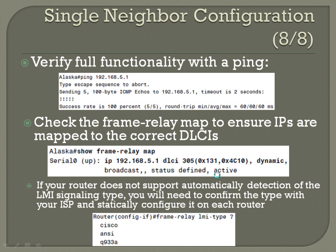If your router does not support automatically detecting the LMI signaling type, you may need to confirm the type with your ISP and statically configure it on each router. Most newer equipment can auto-detect, but if not, the command is entered under the serial interface: 'frame-relay lmi-type' followed by either 'cisco', 'ansi', or 'q933a'.